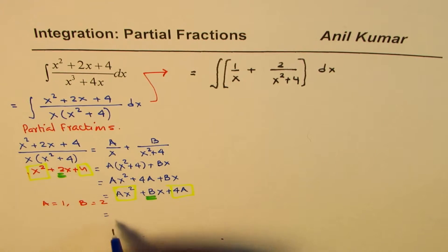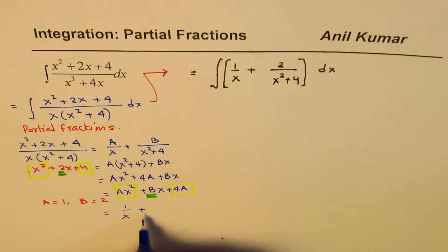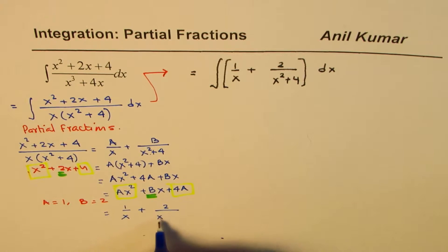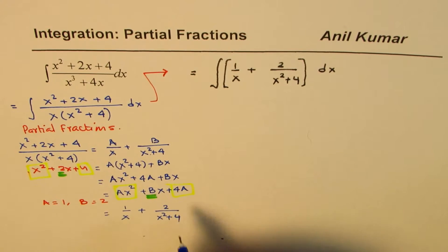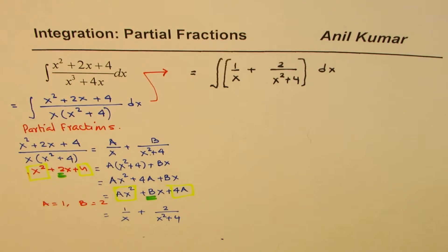So you could write this expression as this. Now when a is 1, let me complete this part also. We could write this as 1 over x plus 2 over x squared plus 4. And then I substituted this here.